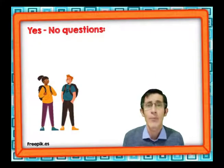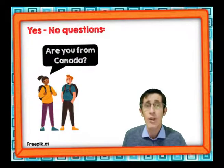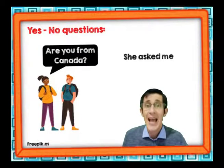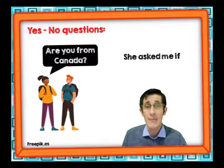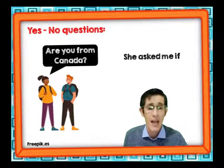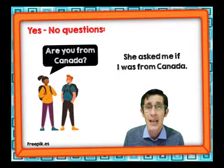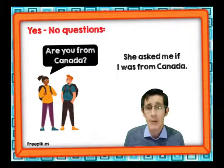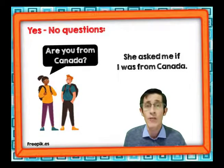Vamos a ver otro ejemplo. 'Are you from Canada?' La chica le está preguntando eso al chico. ¿Cómo nos dice el chico qué es lo que le preguntaron? Quedaría así: She asked me if I was from Canada. La pregunta original es '¿Eres de Canadá?' y para contarla decimos: Ella me preguntó si yo era de Canadá.